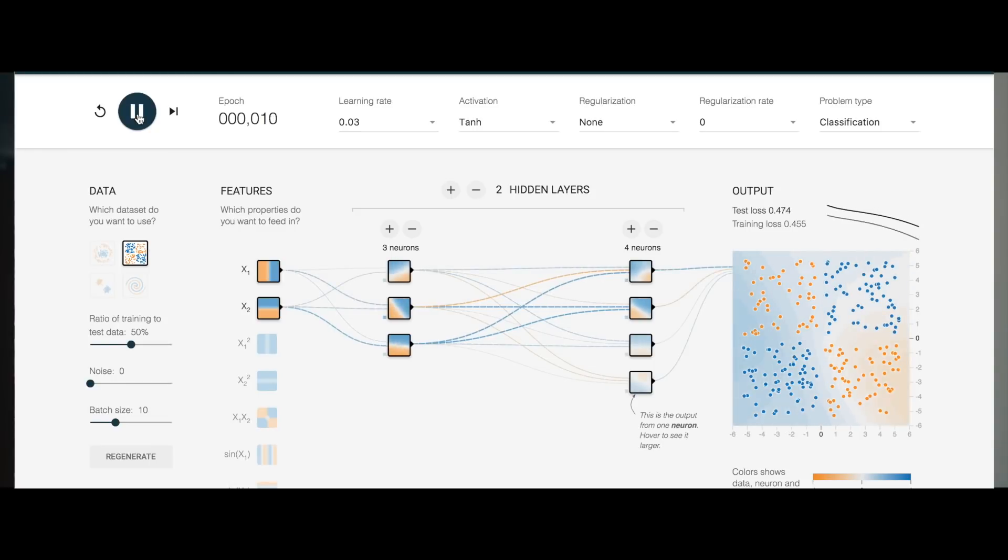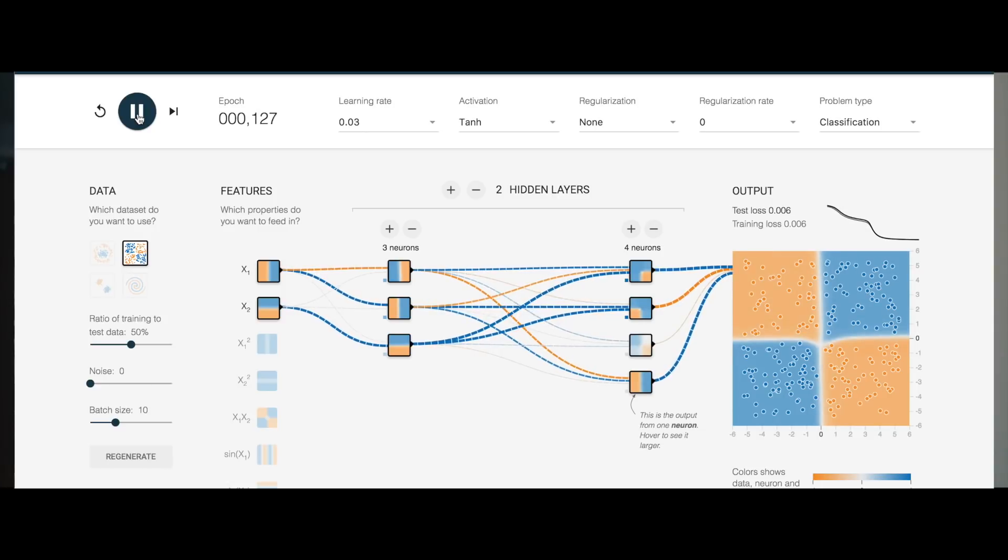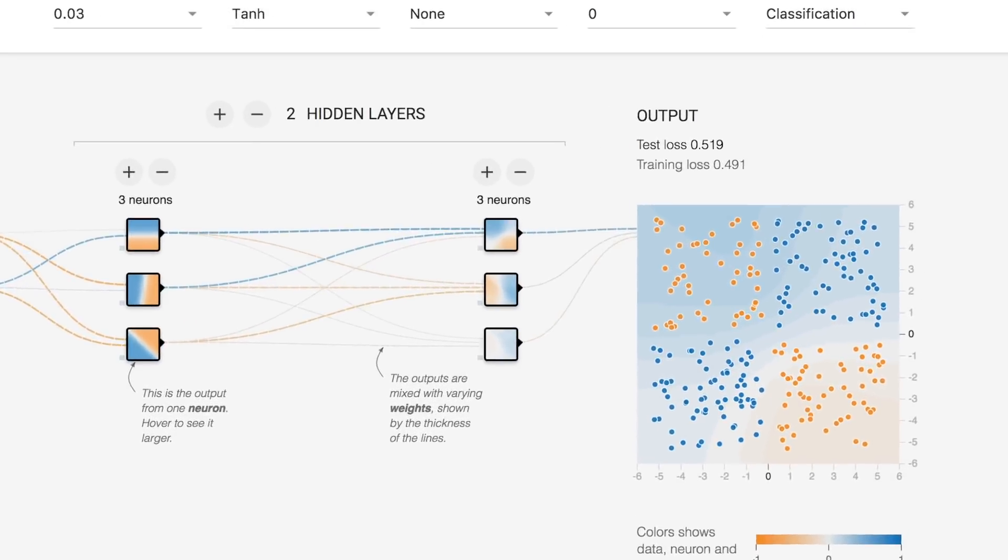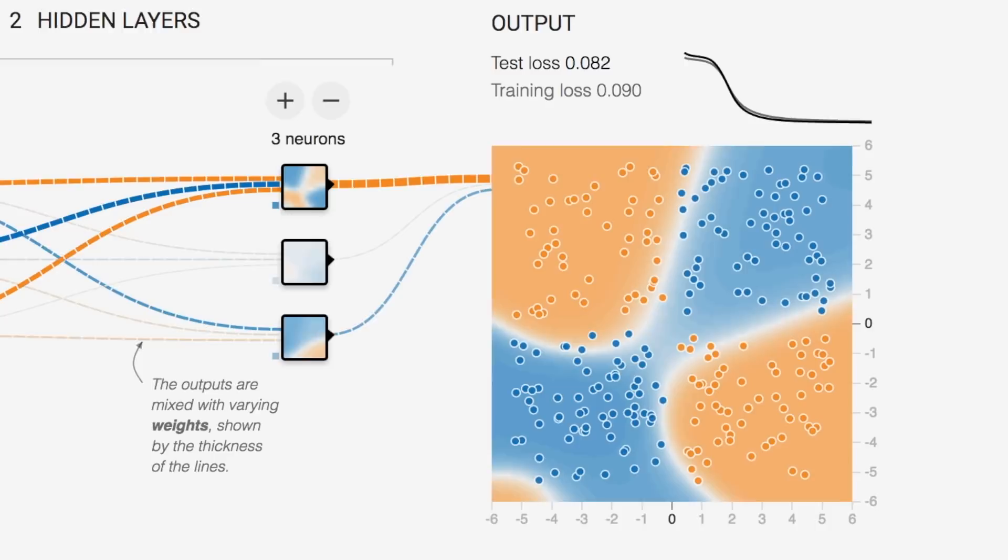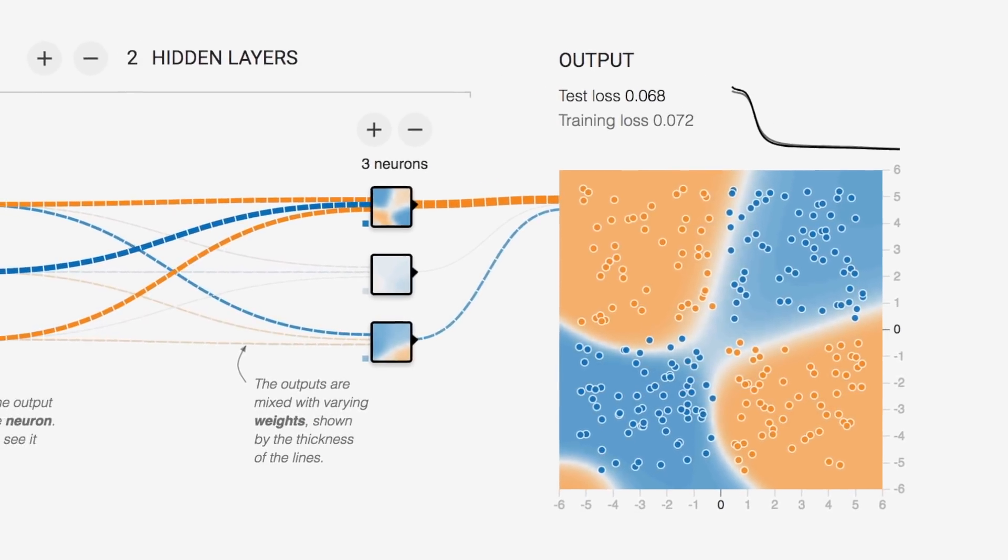This is from TensorFlow. They have a great website where you can experiment with artificial intelligence and machine learning. They have this playground place where you can try actual problems, and if we take this problem for instance, we have this square with two different colored dots in the middle.